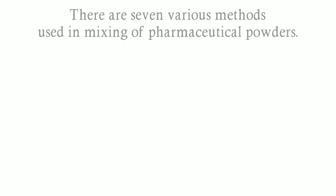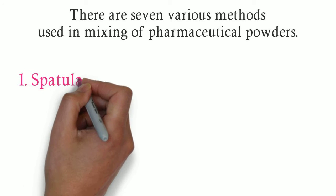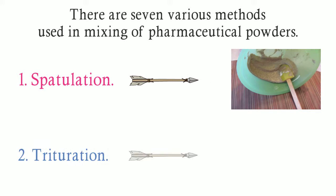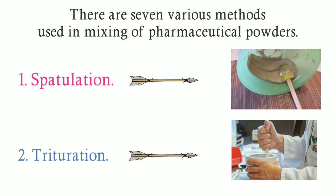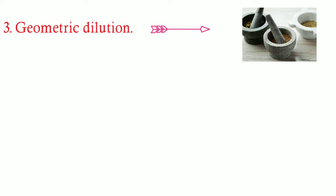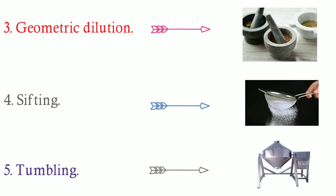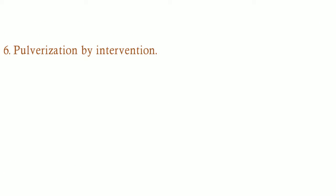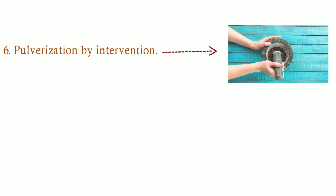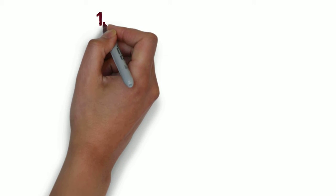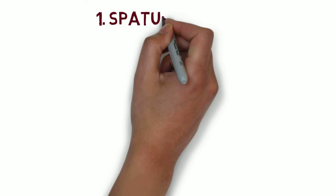There are 7 various methods used in mixing of pharmaceutical powders. They are: 1st method, spatulation; 2nd method, trituration; 3rd method, geometric dilution; 4th method, sifting; 5th method, tumbling; 6th is pulverization by intervention. The last method is lavigation. Now let us see the methods briefly one by one.